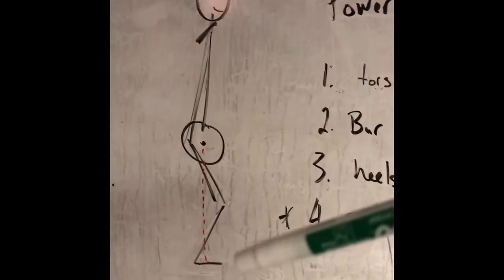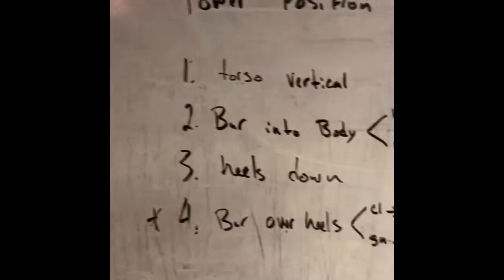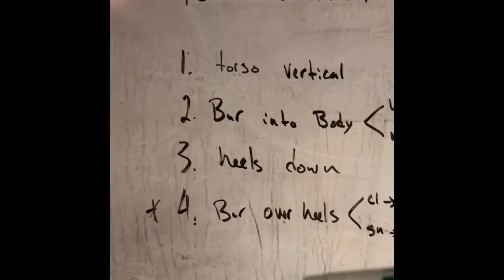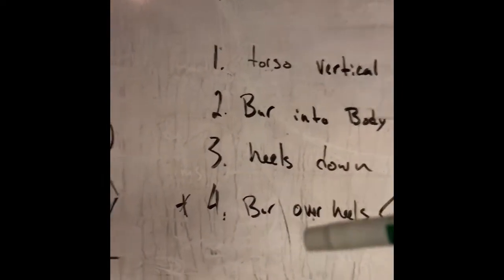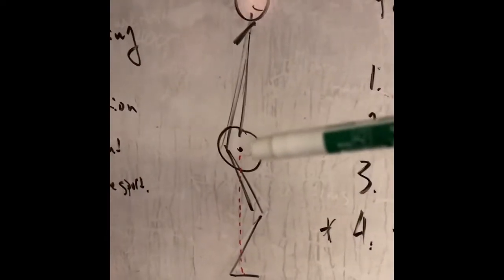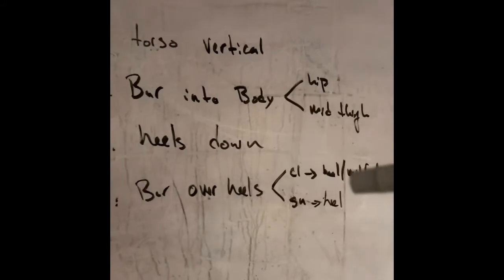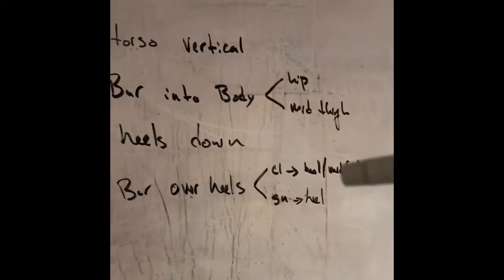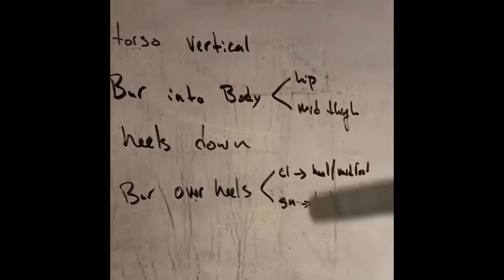Point four. This barbell over the heel. So in the power position, we want the barbell over the heels. In the clean, the bar is going to be over the heels or the mid foot. In the snatch, we want the bar definitely over the heels.